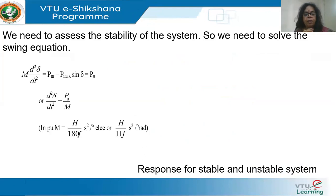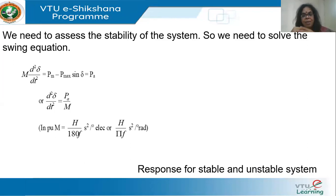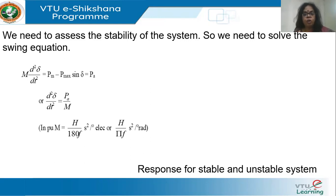Pmax·sin(δ) is the electrical output of the generator. The input power minus the output power gives you the acceleration. If mechanical power is more than the electrical output, the machine accelerates; if less, it decelerates. In an alternator, frequency is directly related to speed by n = 120f/p, so any change in speed is reflected in the frequency.